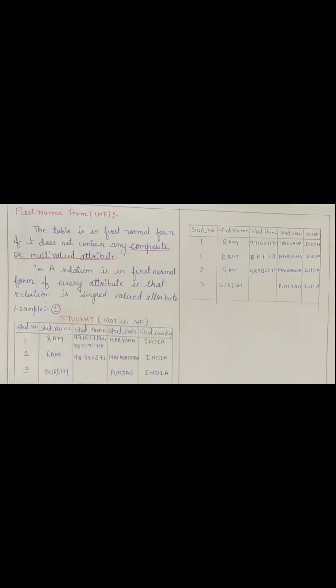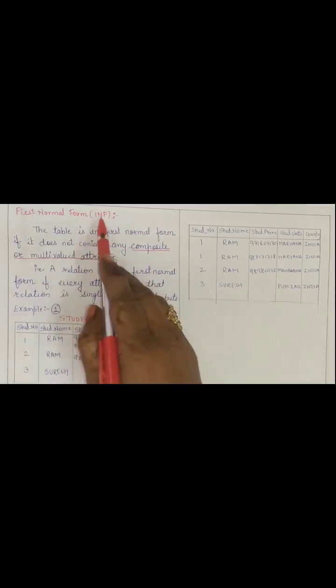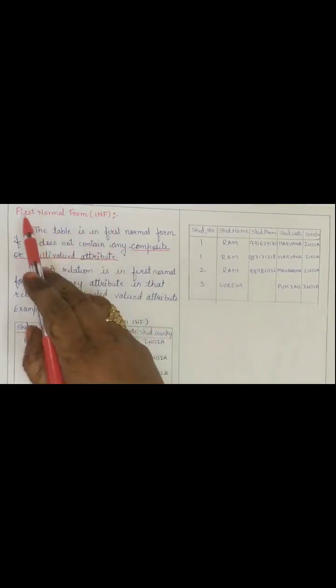Normal forms are nothing but a series of stages or rules which we apply on tables to achieve normalization. The very first form is nothing but 1NF, that is the first normal form.